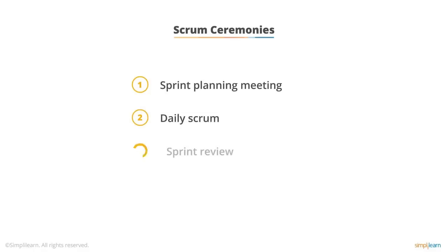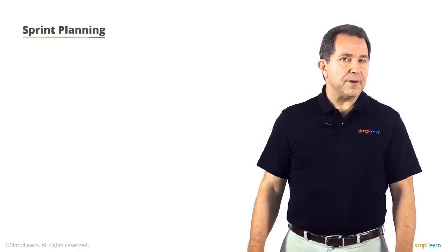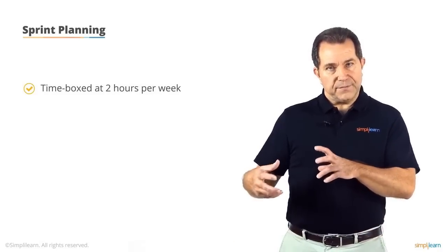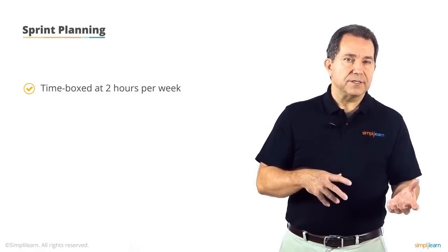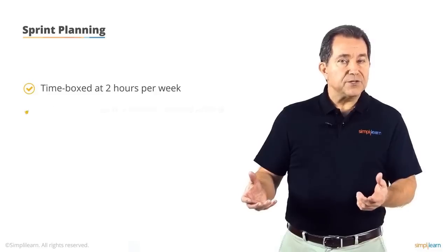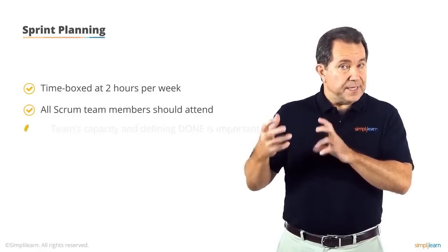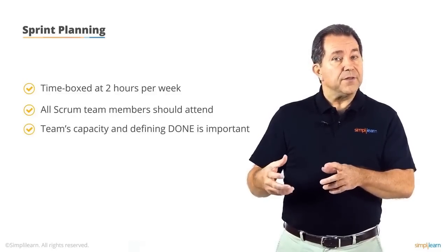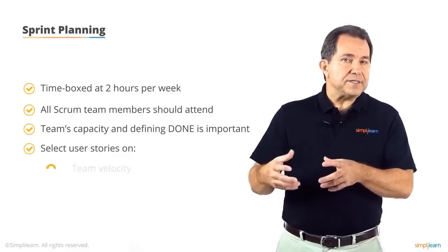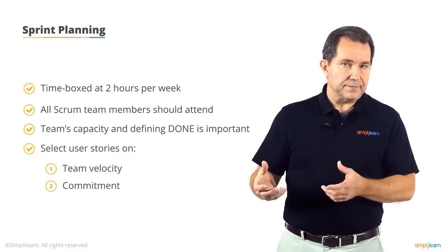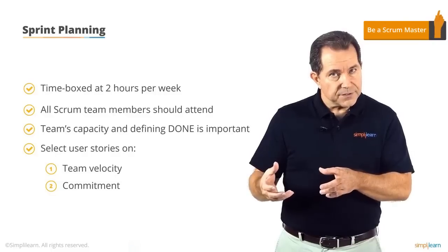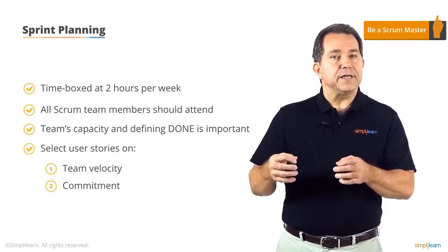There are four Scrum ceremonies: the Sprint Planning Meeting, the Daily Scrum, the Sprint Review, and the Sprint Retrospective. The Sprint Planning Meeting is time-boxed at two hours for each week of the sprint — so a two-week sprint has a four-hour meeting, and a four-week sprint has an eight-hour meeting. It should be attended by the complete Scrum team including all roles. The most important aspects are the team's capacity and the definition of done. There are two approaches to selecting user stories: based on team velocity or commitment-driven. Team buy-in is critical, and the sprint goals and definition of done should be clearly articulated.